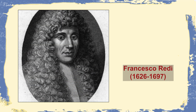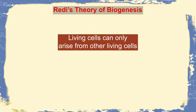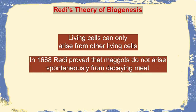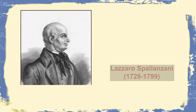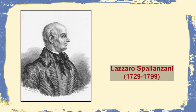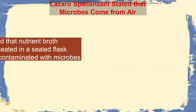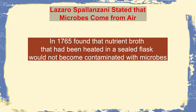Later on, there was a conflict between the spontaneous generation of life and the germ theory of life, which was addressed by the discovery of Francisco Redi. He proposed the theory of biogenesis, stating that living cells can only arise from other living cells. In 1668, he proved that maggots do not arise spontaneously from decaying meat. Later, Lazaro Spallanzani in 1765 found that nutrient broth heated in a sealed flask would not become contaminated with microbes.